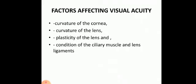The second category is retinal factors, where visual acuity depends on the functional status of the cones. The cones are concentrated more at the fovea, so visual acuity will be highest at the fovea. Towards the periphery, visual acuity will decrease because of this.